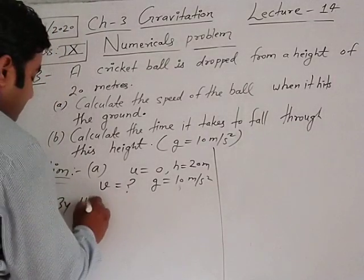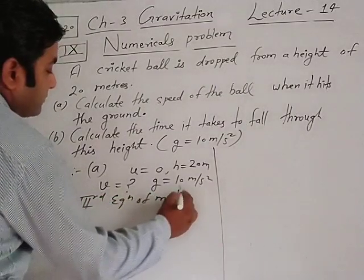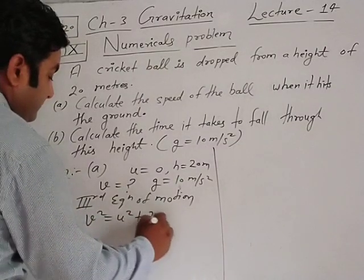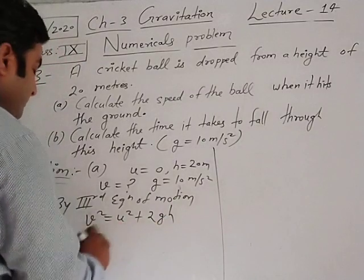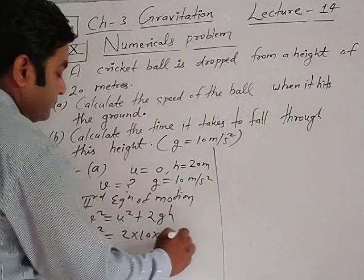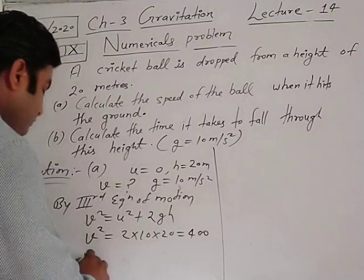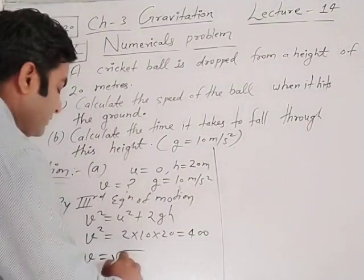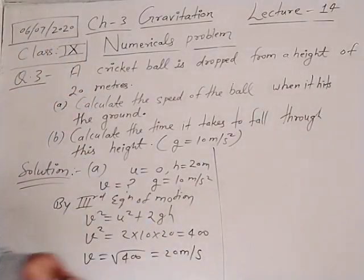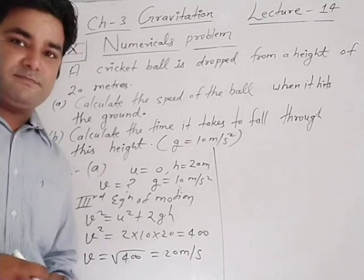By the third equation of motion: V square equals U square plus 2gH. With U = 0: V square equals 2 into 10 into 20 equals 400. Therefore V equals square root of 400, which is 20 meter per second. Very easy — whenever the formula concept is clear, you can solve it within a few minutes easily.